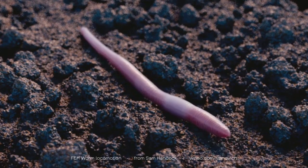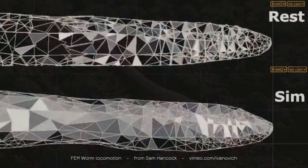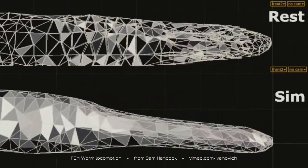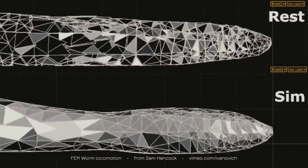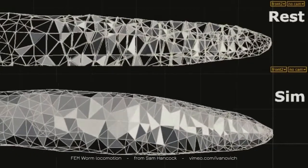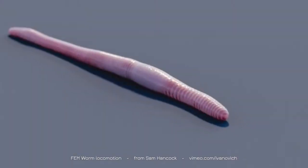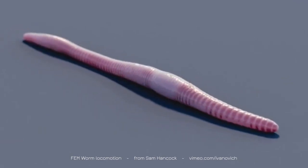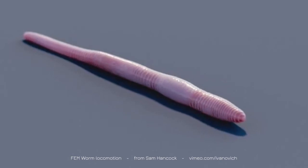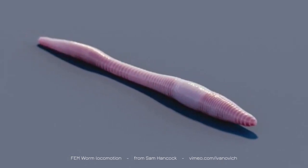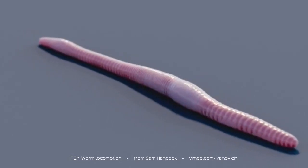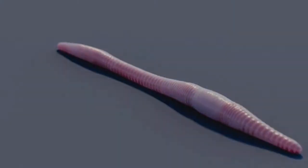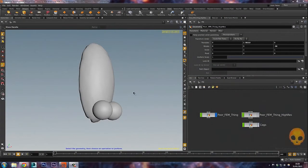You can simulate other things, like this FEM worm locomotion from Sam Hancock. It gives an initial animation — a procedural animation of the worm — and then simulates mixing the animation with gravity and all the dynamics. The worm actually crawls on the floor interacting with everything on the ground, and I think that's really awesome.